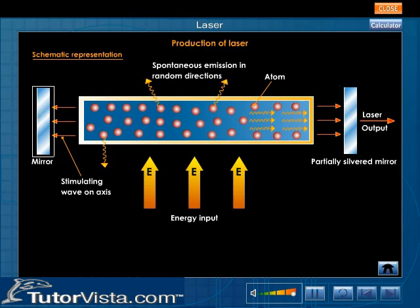Two reflecting mirrors are placed at the ends of the tube to confine the photons to the tube. One of the mirrors is made totally reflecting and the other is made slightly transparent to allow a part of the laser beam to escape.